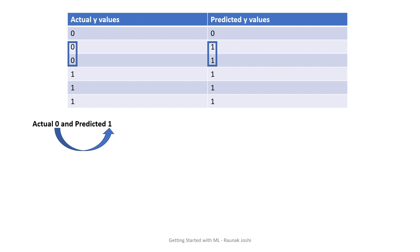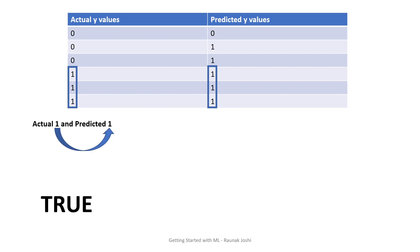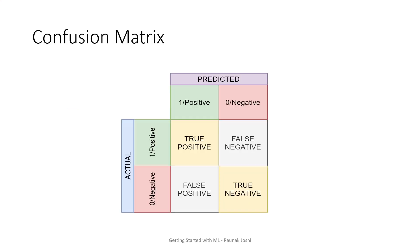False positive: actual is 0, predicted is 1 — false because they don't match, positive because predicted is 1. Next: actual is 1, predicted is 1 — this is true because both match, and the predicted is 1, so it is positive. This is true positive. Finally, we don't have false negatives in our example, but let's just move on.